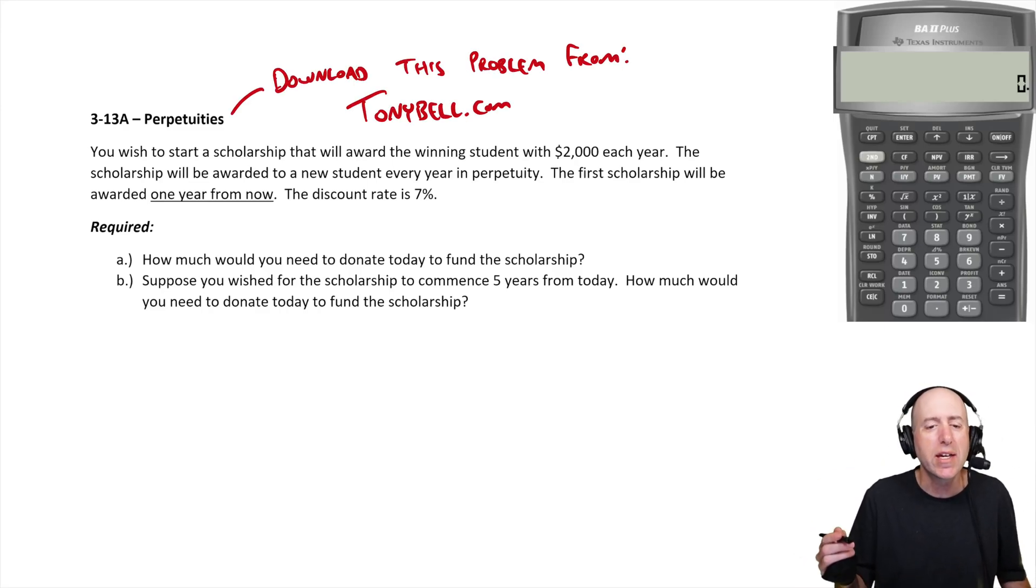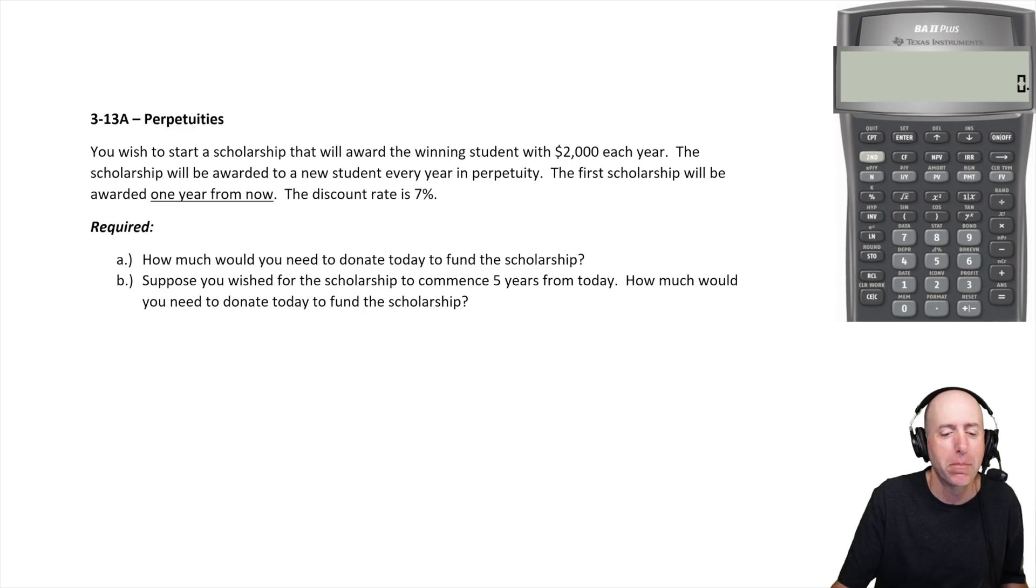Let's examine problem 313a. It's a perpetuity question. Good news is the math of perpetuities is less complicated than much of the math we've been doing. The present value of a perpetuity is the cash flow, the recurring cash flow, divided by the discount rate. That's it. Comparing it to an annuity formula, it's fairly simple.